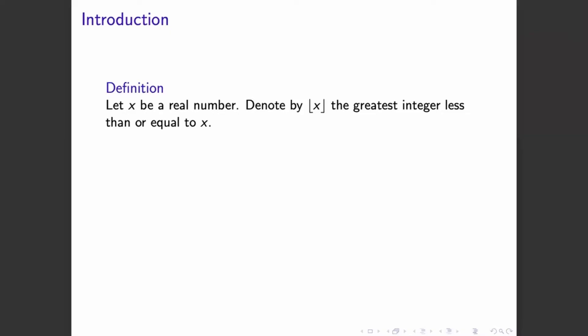Let's say we have a real number x. Then we can talk about the greatest integer that is less than or equal to x. This is precisely what we will refer to as the greatest integer function or the floor function for x.